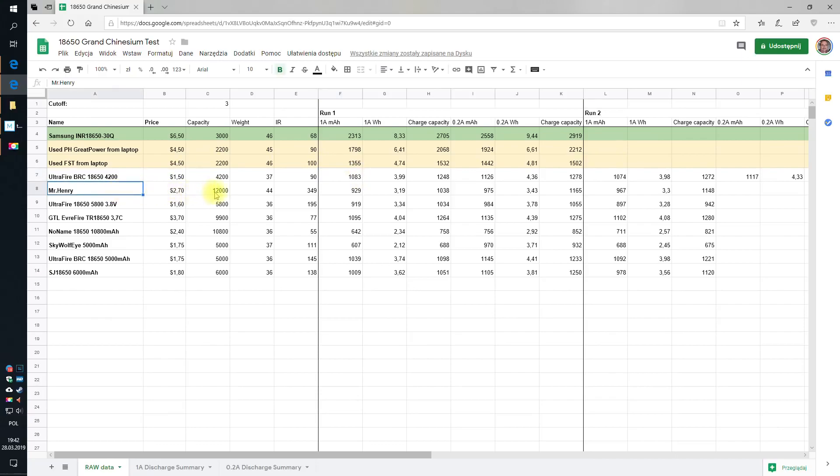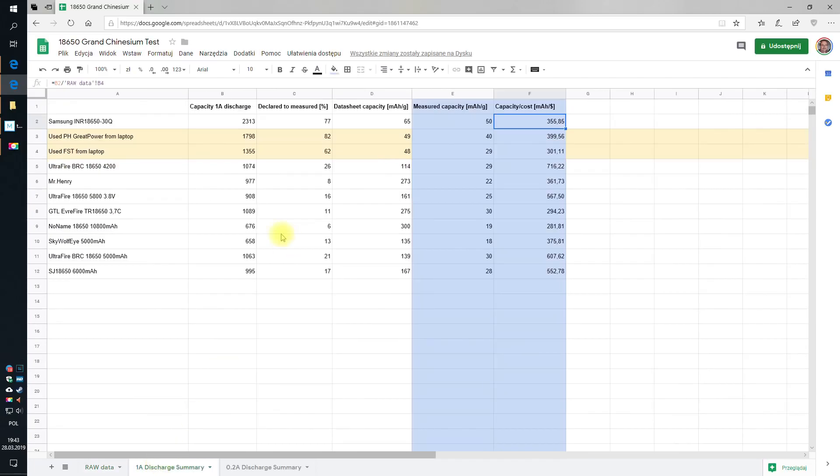And now the magic begins because for example my favorite Mr. Henry with the declared 12,000 milliamp hours with one amp discharge had only 900. It's less than 10% of the declared. At 0.2 not much more. Come on, what are we even talking about? And it was not cheap. Next one: 10,000 - had 600. 700. 5000 - 600. 5000 - 1000, not bad actually, only one-fifth of the capacity declared by the manufacturer. In this test it's really like kind of really good results. Probably the winners are the Ultra Fire BRC 18650 because instead of 4200 they really had like 1000.